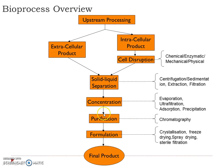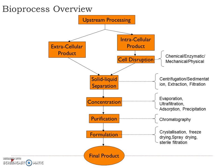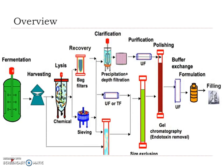Once the product is concentrated, we have to purify it to remove impurities using chromatographic techniques such as gel filtration, ion exchange chromatography, and HPLC. Once purification is done, we go for formulation using techniques like crystallization, freeze drying, spray drying, sterile filtration, or granulation — depending on the type of product — to finally obtain the finished, purified, formulated end product.